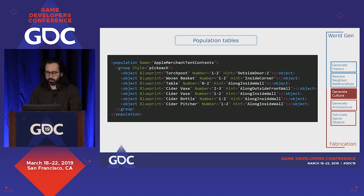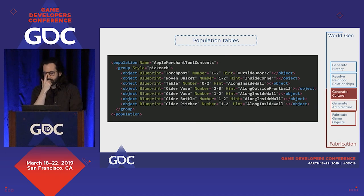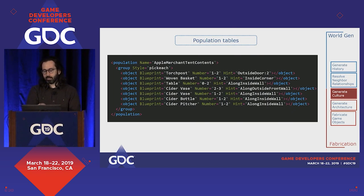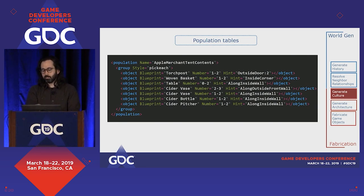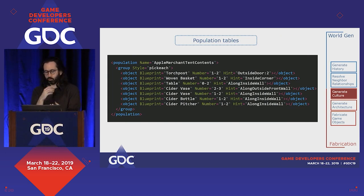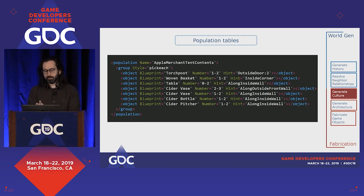We can also use population tables to populate furniture. For example, the table for an apple merchant's tent uses 'pick each' with placement hints as metadata: put one or two torch posts outside the door within radius two, put a woven basket in the inside corner of the room. The consumer of this table knows what to do with those hints — if populating a building, it places objects at the inside corner; if populating someone's inventory, those hints are meaningless and ignored.